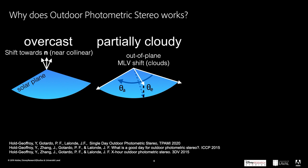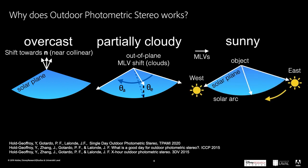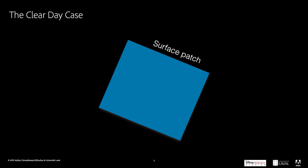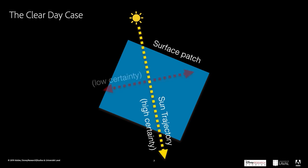However, there is another weather condition that cannot be dealt with using existing methods: clear and sunny days. Sunny days provide a lot of photometric cues along the sun trajectory, but provide almost no signal in its perpendicular axis. This means that the surface reconstruction is well constrained in one direction, but not the other.